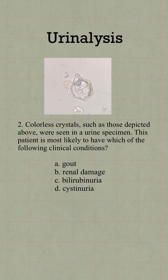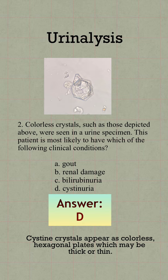Question number 2. In which of the following clinical conditions would this crystal likely be seen? The answer is D. Cystinuria. Cystin crystals appear as colorless hexagonal plates, which may be thick or thin.